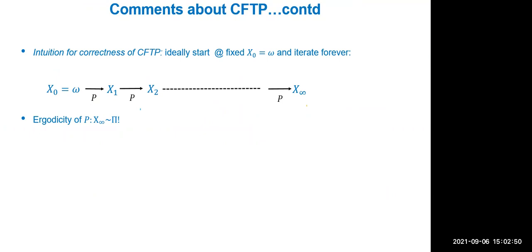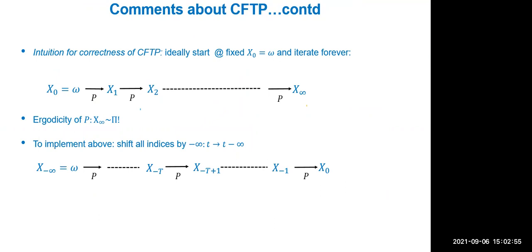What is the intuition for correctness? For the sample to be perfectly distributed according to the stationary distribution, you need the Markov chain to be ergodic — otherwise you can't guarantee the limit equals the stationary distribution. The intuition is: run for infinite time and output the sample at infinity. While mathematically imprecise, CFTP is running from minus infinity to zero — sliding the frame of reference back by minus infinity.